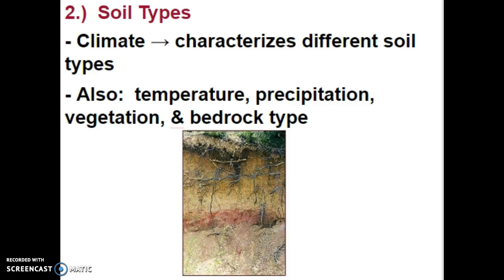There are different soil types all over the world. Climate really characterizes different soil types, because a climate has a particular temperature and precipitation range, and certain types of vegetation will grow within that range, which can also influence soil types. The original solid bedrock type also matters — different types of bedrock can lead to different types of soils.